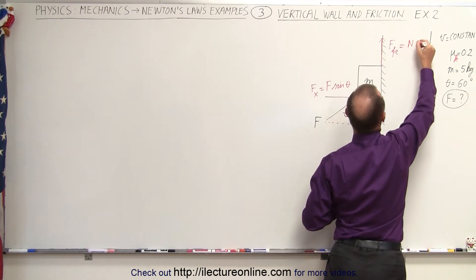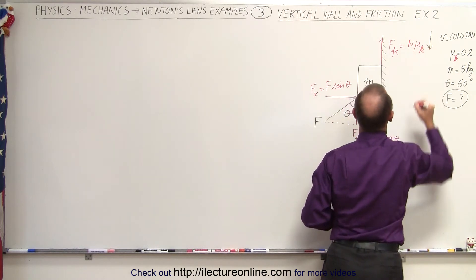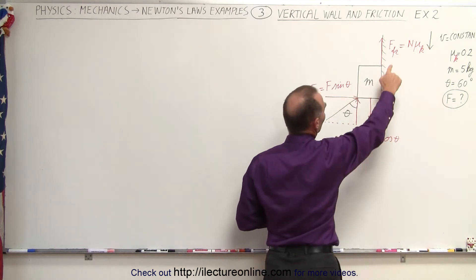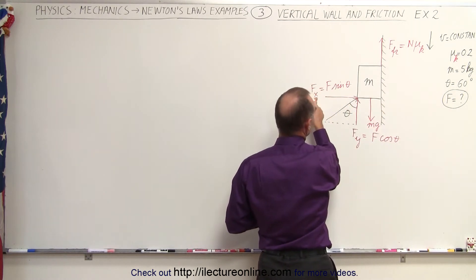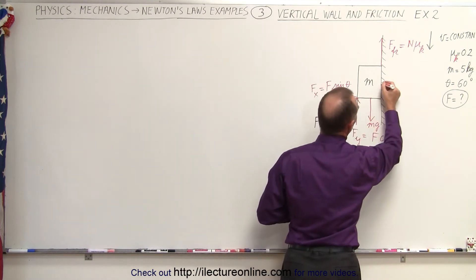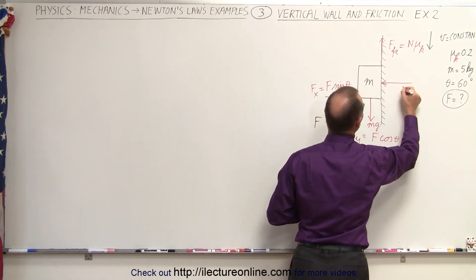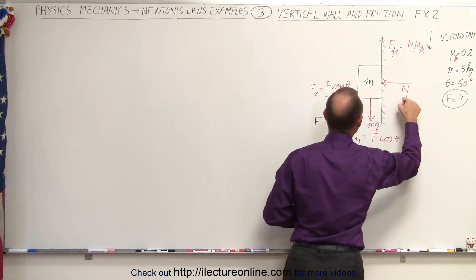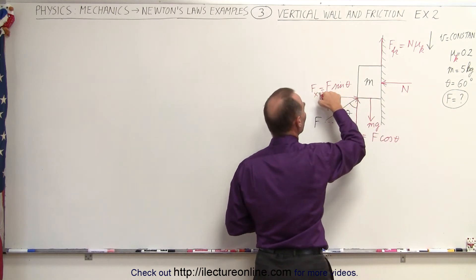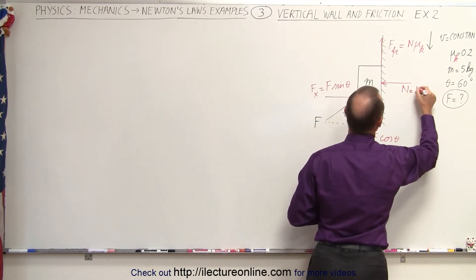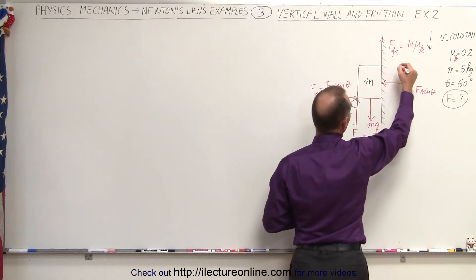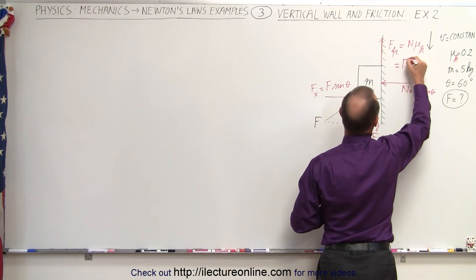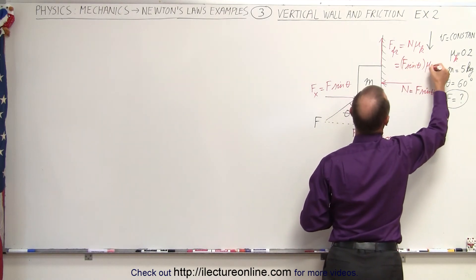It's going to be equal to the normal force times mu. It's going to be mu sub k. And then where does that normal force come from? Well, since the force in the x direction, the x component of the force is pushing to the right, we have a normal force which is pushing to the left. The normal force is going to be equal but opposite to the force pushing against it. So this is going to be f times the sine of theta. And so therefore the friction force is going to be f times the sine of theta multiplied times mu sub k.